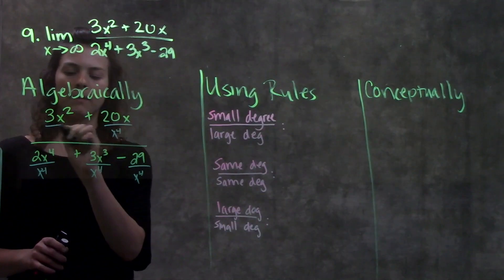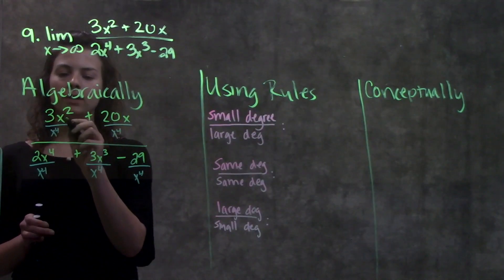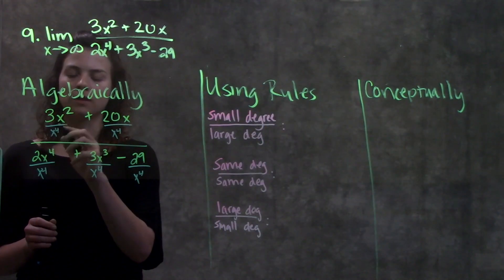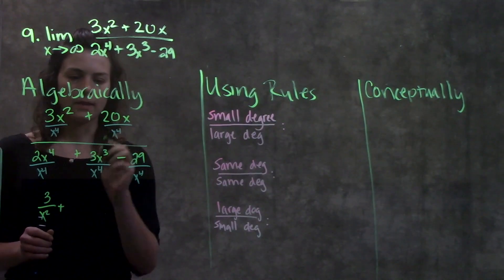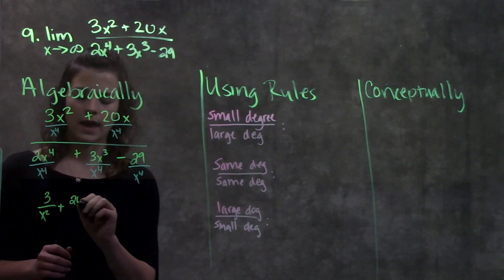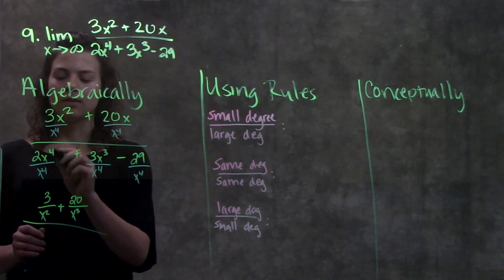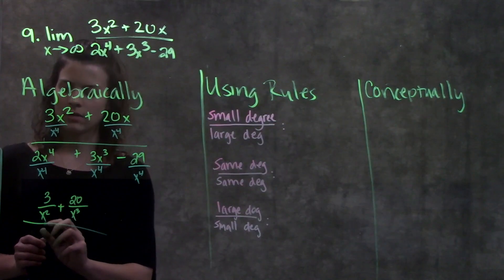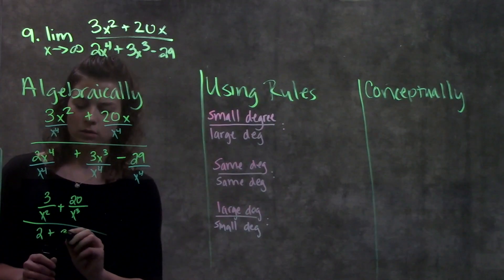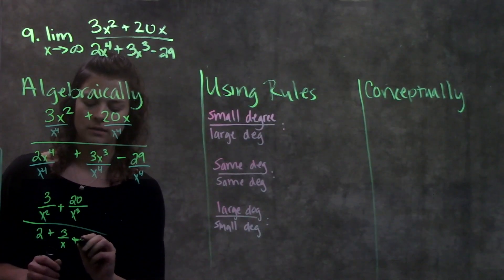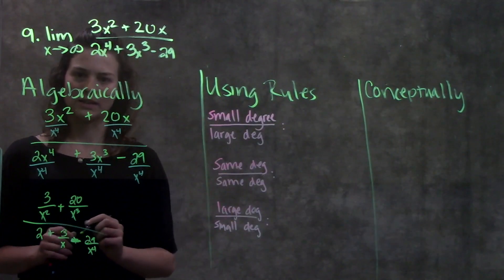I take my leading term which is x to the fourth and put everything over x to the fourth. From here I'm going to cross out my common terms. Starting with my numerator, I have 3x squared over x to the fourth, the x's cancel, and I'm left with 3 over x squared. Plus 20x over x to the fourth, the x's cancel, I'm left with 20 over x cubed. Then on the denominator, the x to the fourth cancel out, I'm left with just 2, plus I'm left with 3 over x minus 29 over x to the fourth.